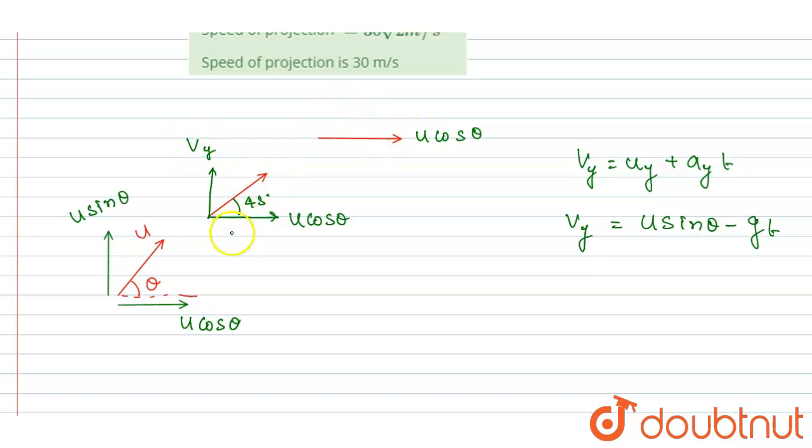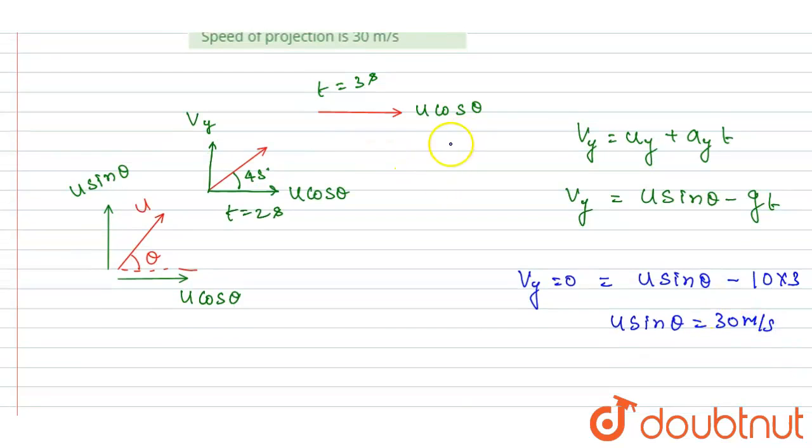At t goes to 3 seconds, the vertical component is zero. So if I make this vertical component zero, so I will write v_y equals zero at t goes to 3 seconds. Put the value of t equals 3 here, so I will write 10 into 3, that is 30. So from here you will get the u sin theta value, and it is 30 meters per second.